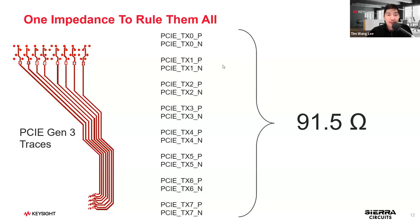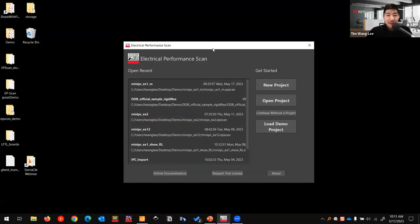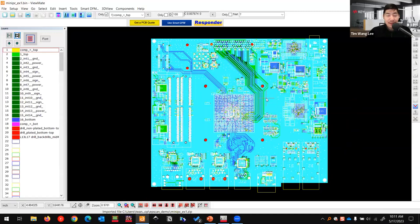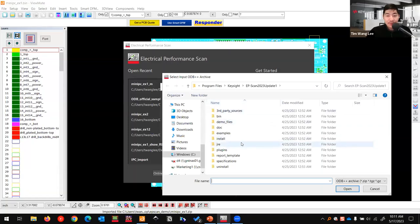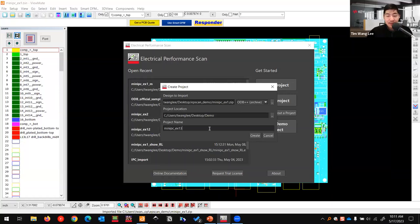Next, I'm going to show you a quick demo on how to find something with EP Skin. Usually what you will see is a layout board file like this. How do we find whether a PCIe trace impedance is wrong? What I'll do is bring it into electrical performance scan. Let's navigate to desktop, EP Skin demo. This one is board one and I'll create it.